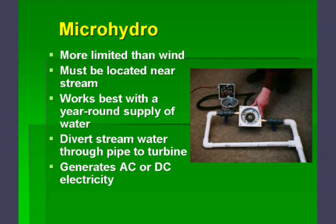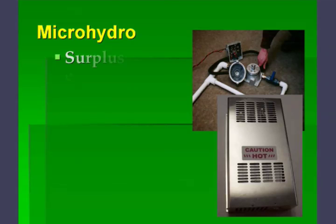There are DC generators. Most of them are AC, but there are DC generators as well. And it produces 24 hours a day.